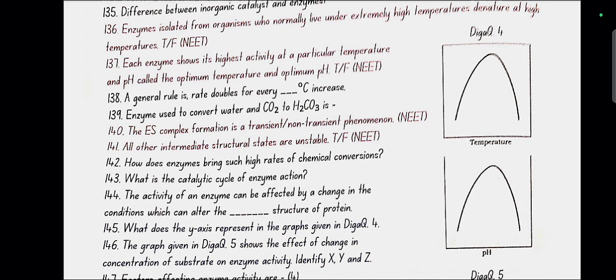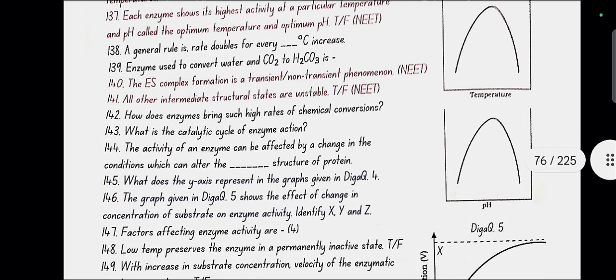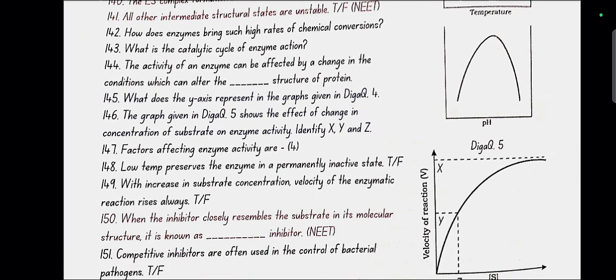Enzyme used to convert water and CO2 to H2CO3 is carbonic anhydrase. The ES complex formation is a transient phenomena. All other intermediate structure states are unstable. How does enzyme bring such high rates of chemical conversions? By reducing the activation energy needed. What is the catalytic cycle of enzyme reactions? E + S enzyme plus substrate gives ES gives EP gives E + P product. The activity of an enzyme can be affected by a change in the conditions which can alter the tertiary structure of the protein.